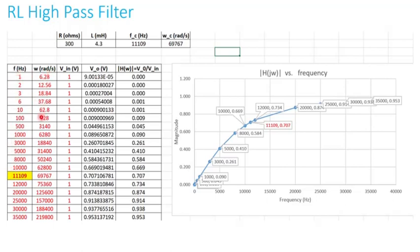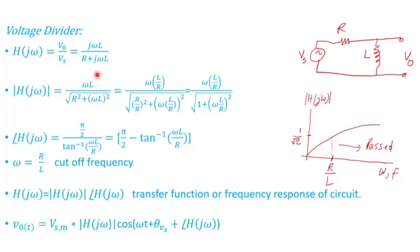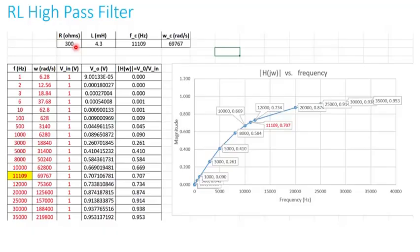To keep things simple, I set the input voltage to 1 volt, then calculated the output voltage based on the transfer function formula. You can see how the output voltage and transfer function change as the frequency changes.